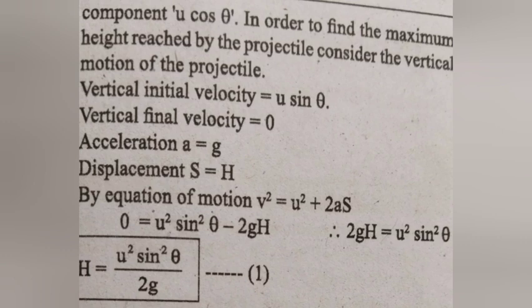Vertical initial velocity is equal to u sin theta. Vertical final velocity is equal to 0. Acceleration is equal to g. Displacement is equal to h. By equation of motion, v square is equal to u square plus 2as. 0 is equal to u square sin square theta minus 2gh.